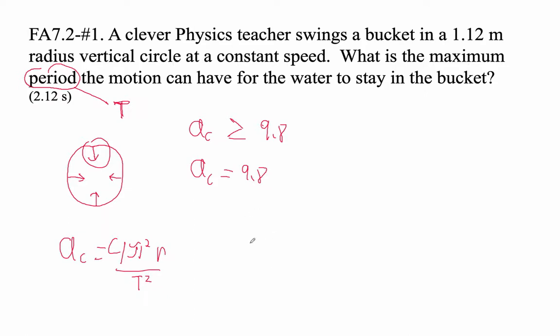So all we're going to do is say that the acceleration is 9.8. So 9.8 is equal to 4π² times our radius, 1.12, divided by t².